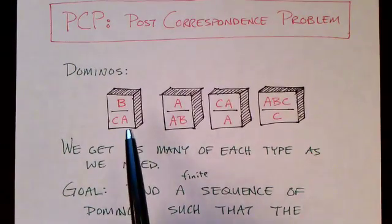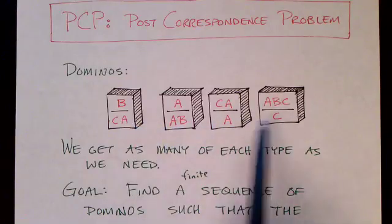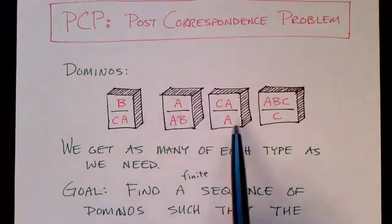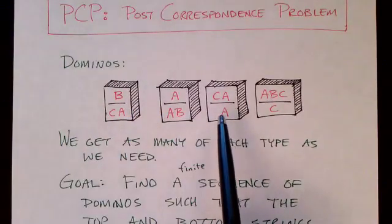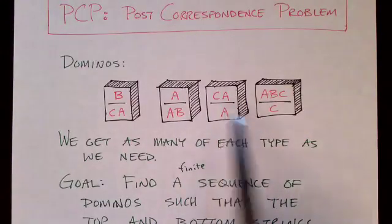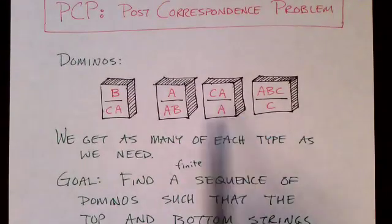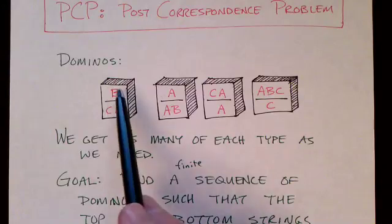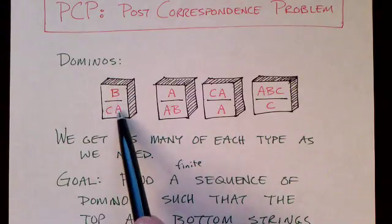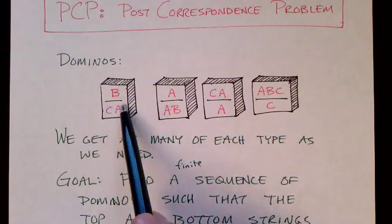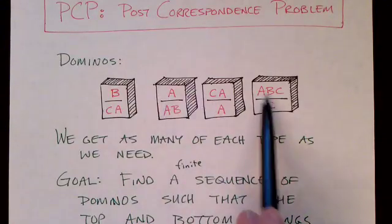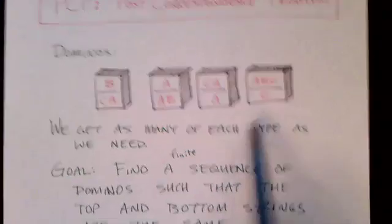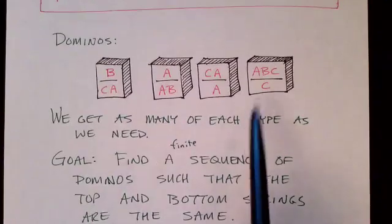Here we are given four tiles. Each tile is different and we have four different types of tiles. In finding a solution to this problem we can use each of these tiles as many times as we want. So each tile has a top and a bottom, like this one has a top of B and a bottom of CA, and we have as many of this sort of tile as we need. There's an infinite supply of tiles. This one has ABC on the top and just C on the bottom.